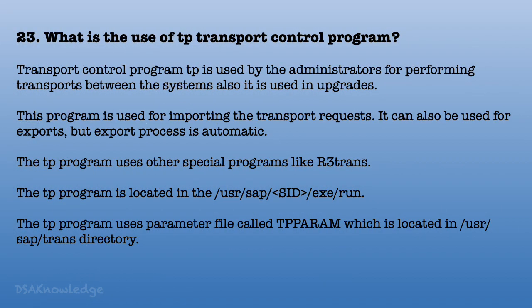What is the use of the TP transport control program? TP is used by administrators for performing transports between systems and also during upgrades. It is used for importing transport requests and can be used for exports, though the export process is automatic. The TP program uses other special programs like R3trans. TP is located in /usr/sap/SID/exe/run and uses a parameter file called TP param located in the /usr/sap/trans directory.